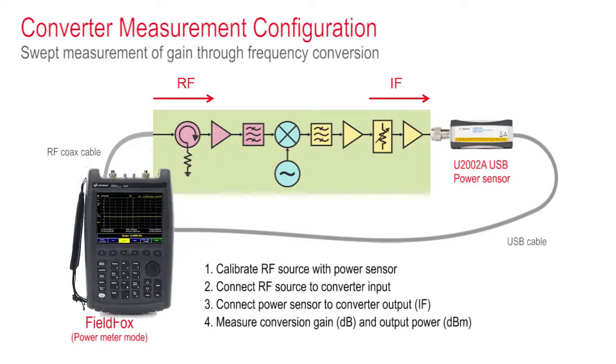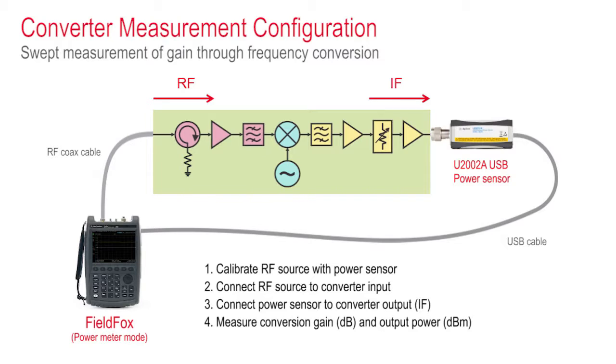Using FieldFox as a source and controller for the USB power sensor, we're able to show the ratio of the RF range to the IF range on the same x-axis as conversion gain.